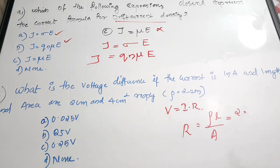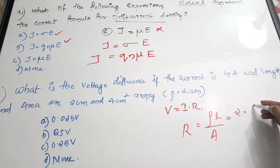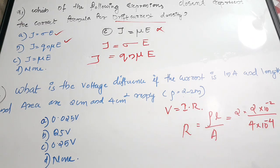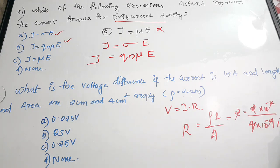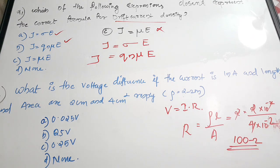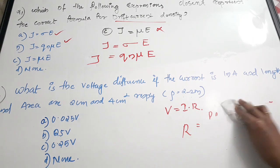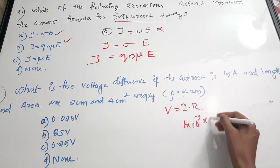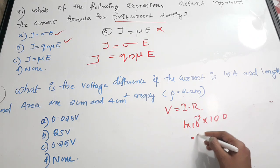Length is 2 cm = 2×10⁻² m, and area is 4 cm² = 4×10⁻⁴ m². So R = 2 × (2×10⁻²) / (4×10⁻⁴) = 100 Ohms. Now substituting into the voltage equation: V = 100 × 1×10⁻³ = 0.1 volt. From the options — 0.025, 25, 0.25, none — the correct answer is option D, none of the above, since 0.1 V is not listed.